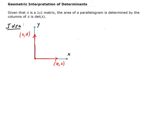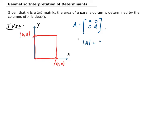If we form a parallelogram — extending this side over here and this side over here — then we get a parallelogram. So the matrix A is going to be equal to the vector on the x-axis as the first column of A, and the second vector along the y-axis as the second column of A. So if we take the determinant of this matrix, we get simply A times D.